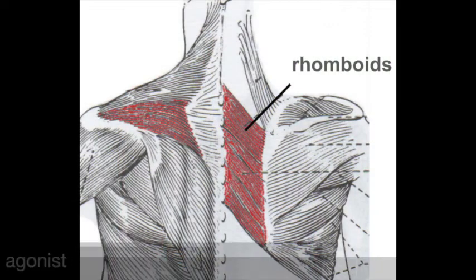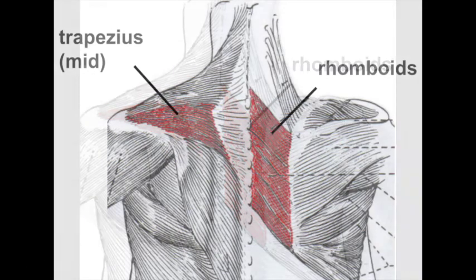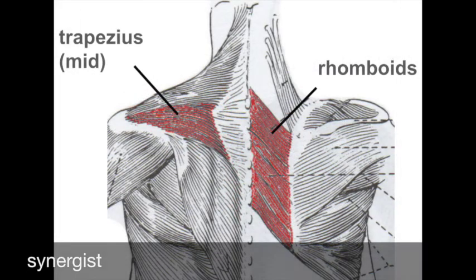The agonist or prime mover of scapular retraction is the rhomboids. Synergist or assisting muscle is again the trapezius, but this time the middle fibers.